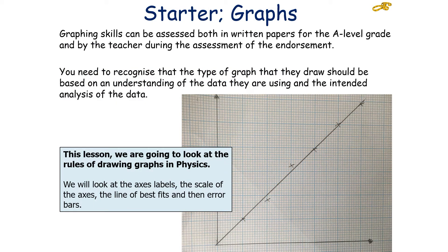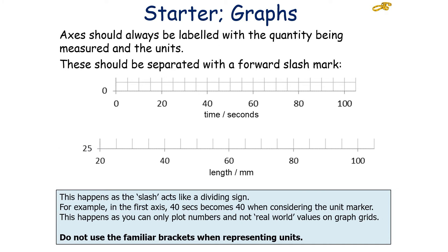Graphing skills can be assessed in both written papers for the A-level grade and by teachers during the assessment of the practical endorsement. You need to recognise that the type of graph you draw should be based on an understanding of the data you are using and the intended analysis of that data. In this lesson, we're going to look at the rules of drawing graphs in physics: axes labels, the scale of the axis, the line of best fit, and the error bars.